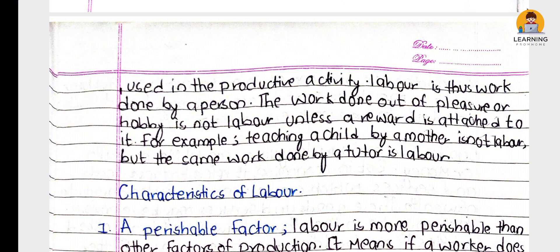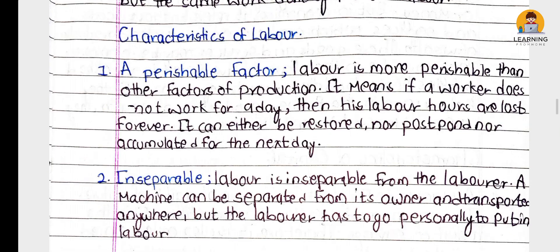When a reward is attached to the labor, it becomes labor in the economic sense. A perishable factor — labor is more perishable than other factors of production. If a worker does not work for a day, then his labor hours are lost forever; they can neither be restored, postponed, nor accumulated for the next day. Labor is thus the most perishable factor.